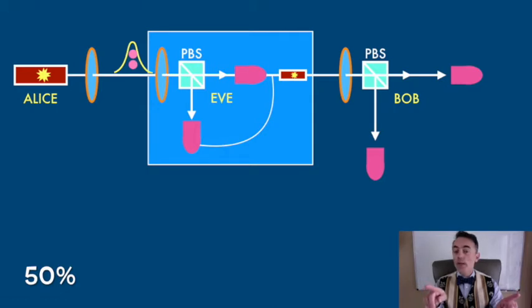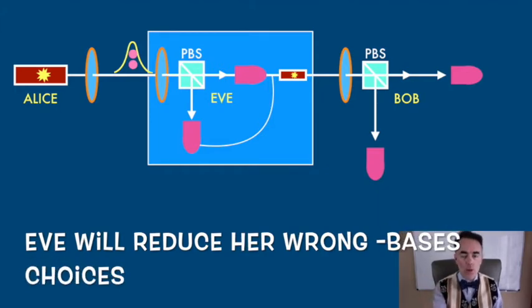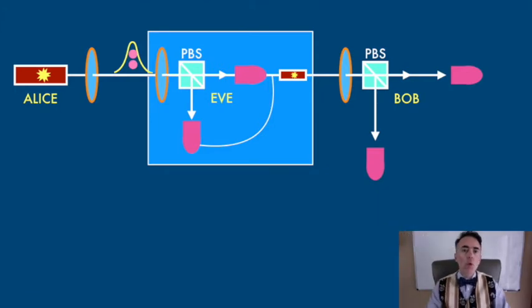This way Eve would know that she had the wrong basis because both clicked at the same time, and she will not send that pulse to Bob, reducing that way the cases of wrong basis choice. Bob will only miss that pulse but would not know that Eve was there. If a pulse has three photons, even better for Eve.